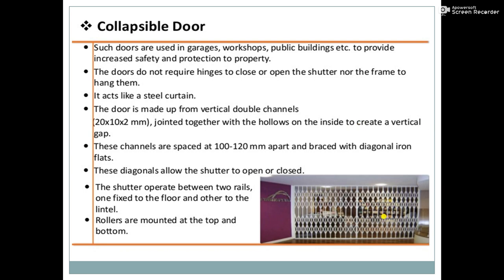Generally the collapsible door is used in garages, workshops, and public buildings for safety and protection of property. These doors do not have any type of frame or shutter; they are made up of channels connected to each other, fixed at the base and top with the help of rollers, so they can be rolled over and used.